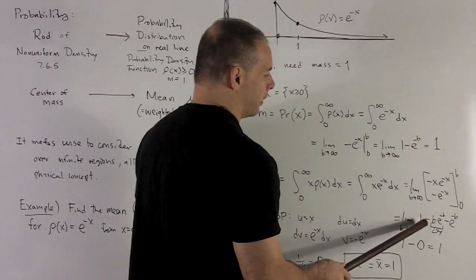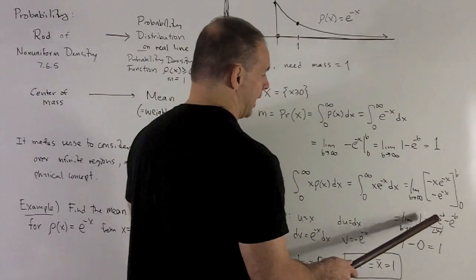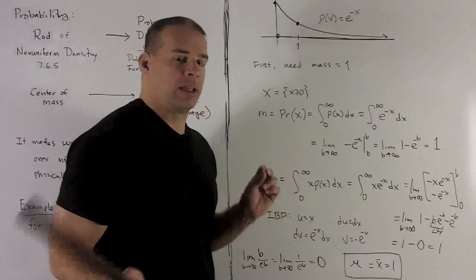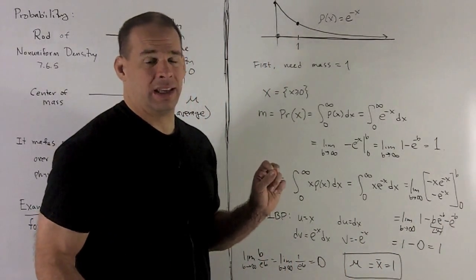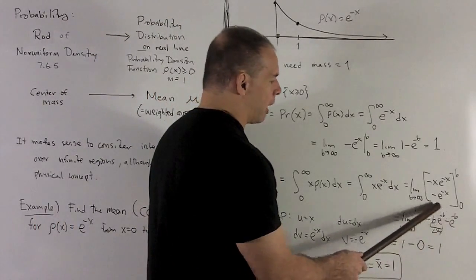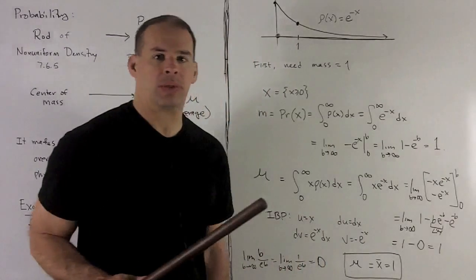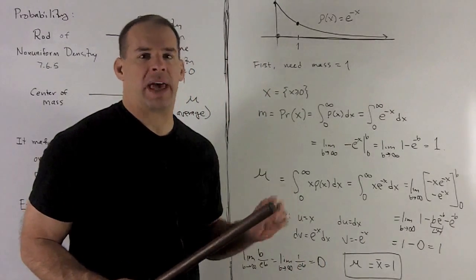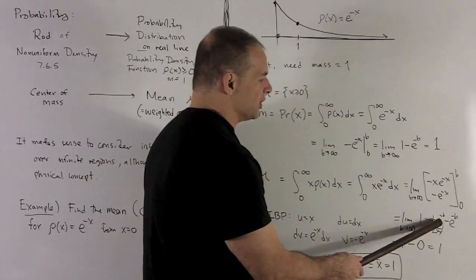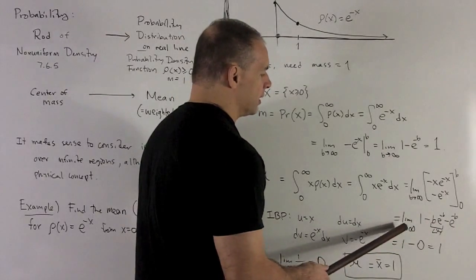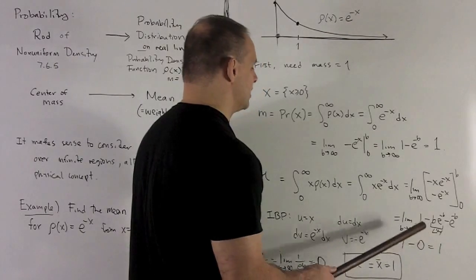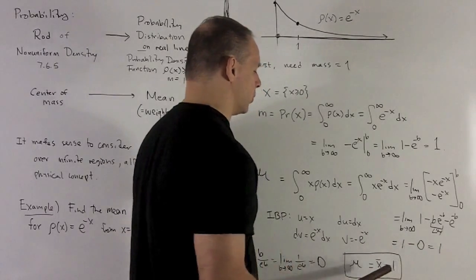So when I do that, we're going to be left with the term 1 minus b e to the minus b minus e to the minus b. We just saw or noted e to the minus b is going to go to zero as b goes off to infinity. So I only need to worry about this middle term here, which we'll get with L'Hopital's rule. Let's put that off for a second just so we can get to our answer. This is going to go to zero. So I'm going to be left with the limit as b goes off to infinity is 1. So my moment about the origin is 1, the same as the mean. So our mean is equal to 1.